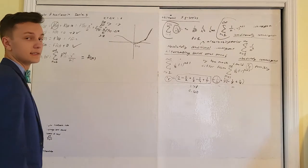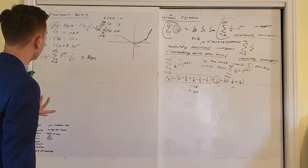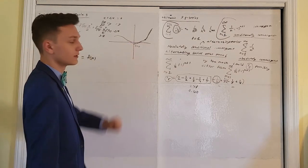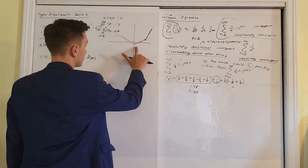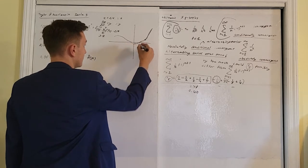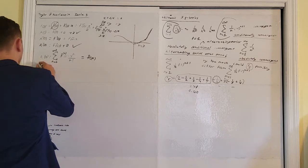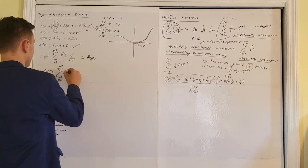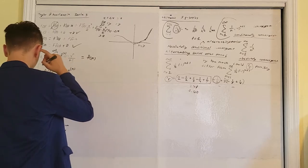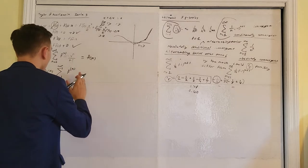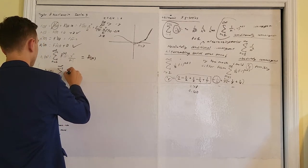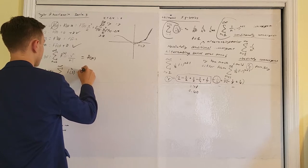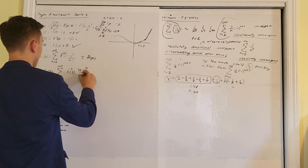The Maclaurin series is a series centered at x equals 0. Instead of centering at 0, we could center at x equals 3. In that case, our approximation function would be the infinite sum from n equals 0 to infinity of the nth derivative of f at 3, times (x−3)^n over n!. This is called the Taylor series.